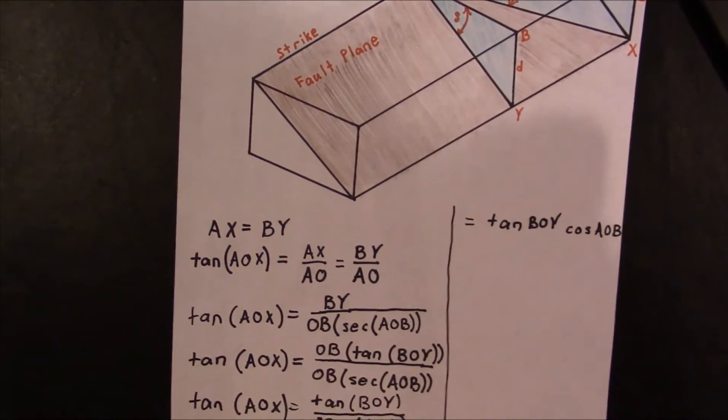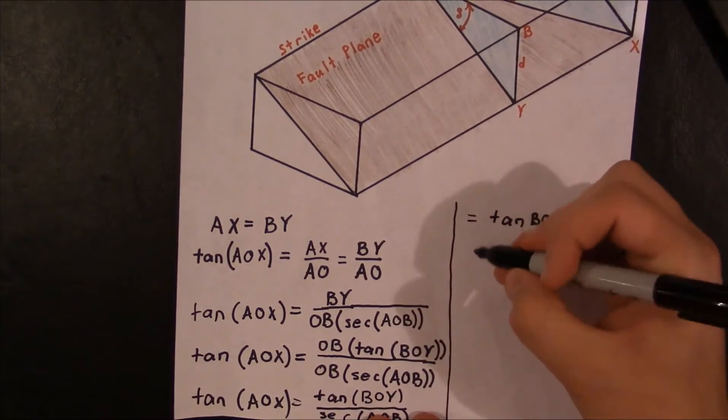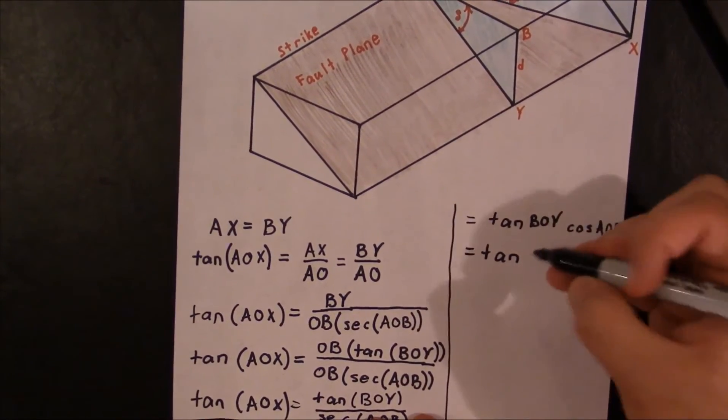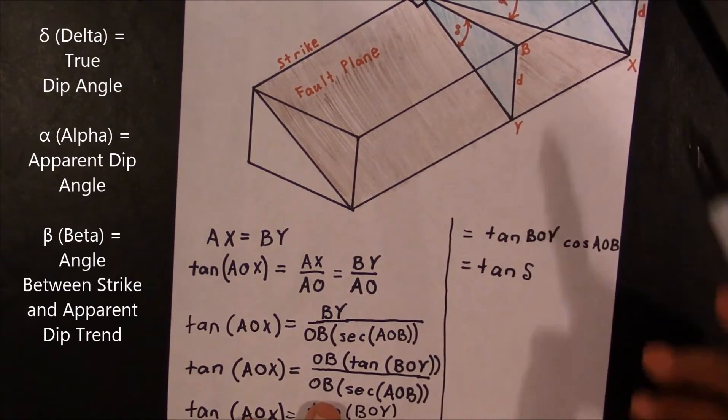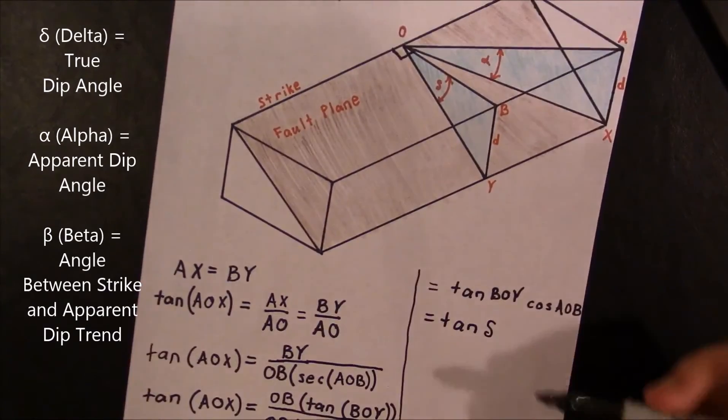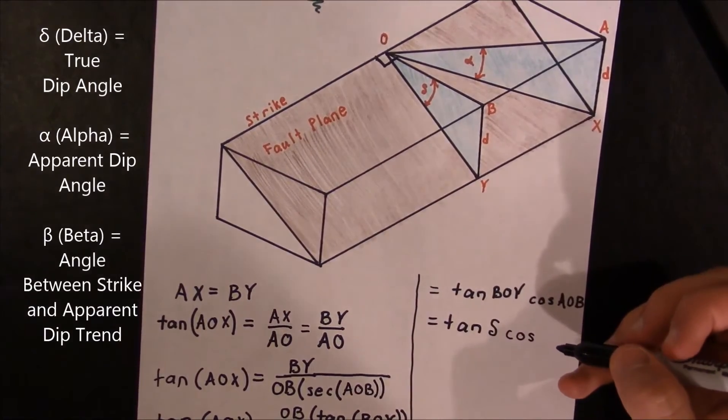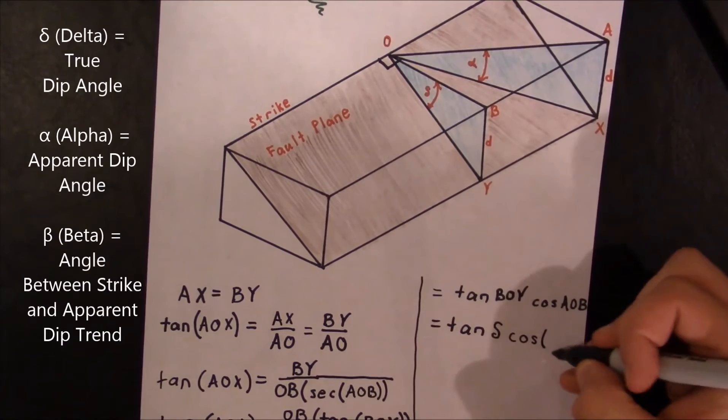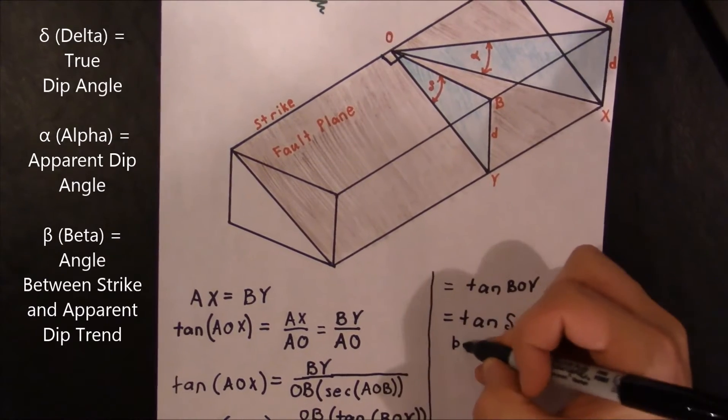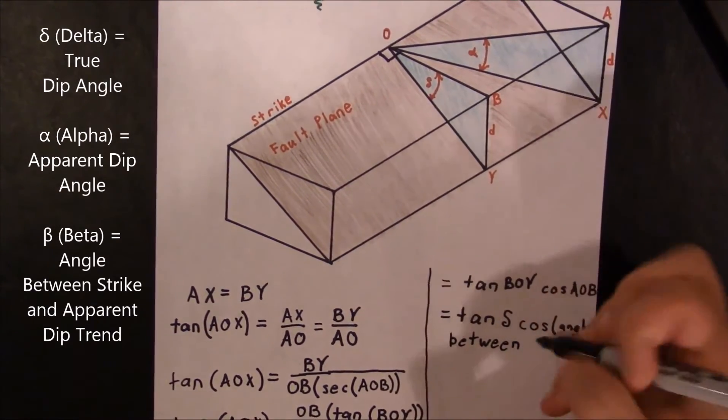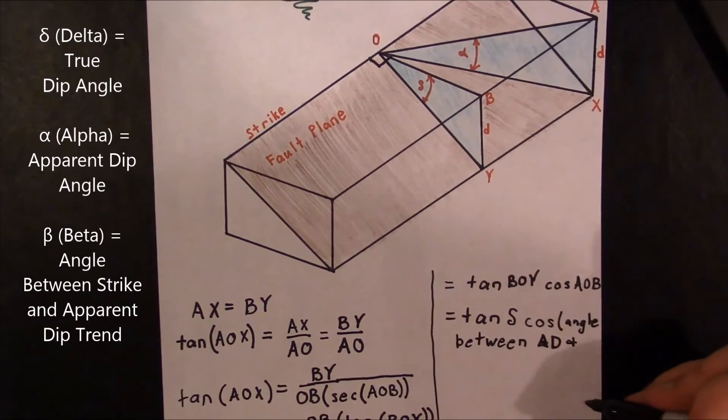All right, and now we're ready to use symbols. So BOY is really just this angle, right? This is just the tangent of delta. All right, AOB is just going to be, for now, I'm just going to leave this as the angle between apparent dip and true dip.